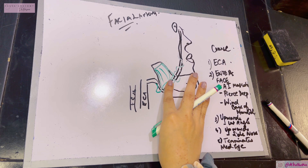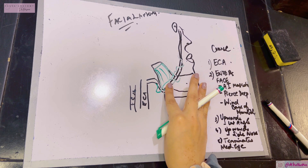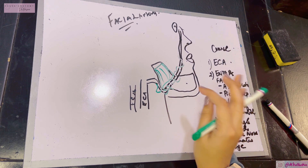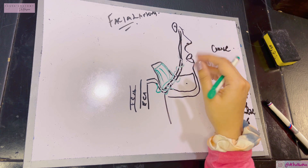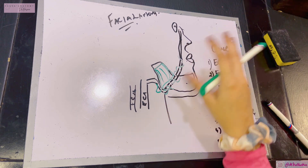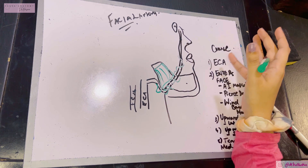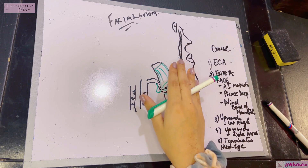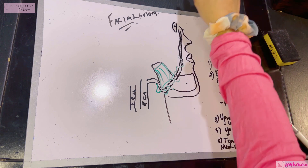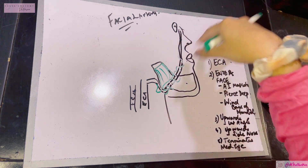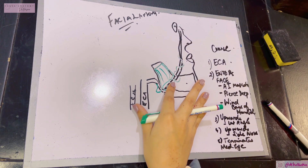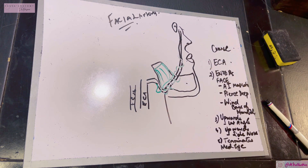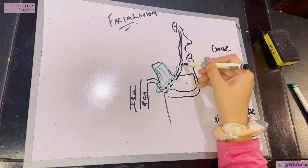The antero-inferior part of the masseter muscle, at the angle of the jaw, is where anesthetists palpate the facial artery — that's why it's known as the anesthetist's artery. During surgery on the lower limb, the anesthetist needs to check the patient's pulse without interfering with the surgical site, so they can simply palpate the facial artery at the face without disturbing the ongoing surgery.